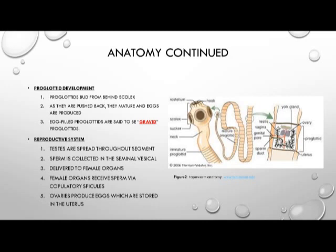The reproductive system of cestodes includes testes, which are spread throughout the segment, and the sperm from those testes is collected in a seminal vesicle and delivered to the female organs. The female organ receives the sperm via copulatory spicules, and includes ovaries which produce eggs that are stored in the uterus.